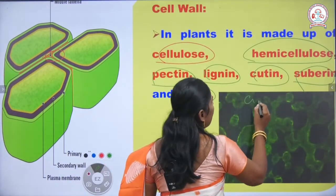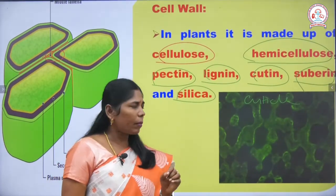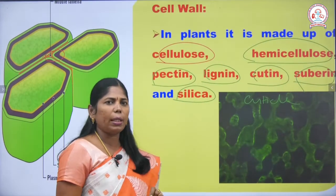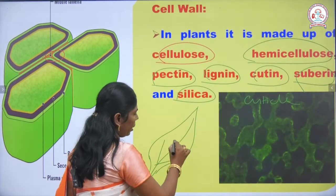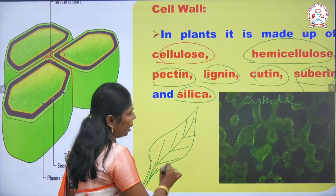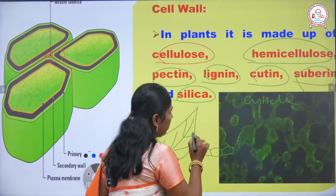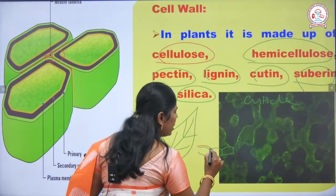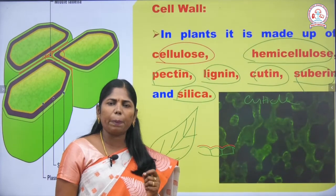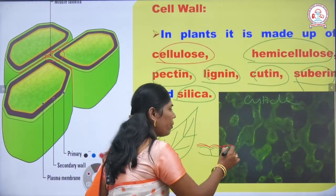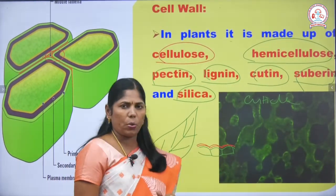Cutin is a cell wall material used to build up the cuticle. The cuticle is present on the outermost layer of the leaf, above the epidermis. The cuticle is a waxy-like substance that protects the underlying tissues. Its main functions are to check excessive transpiration and to protect underlying tissues from germs.